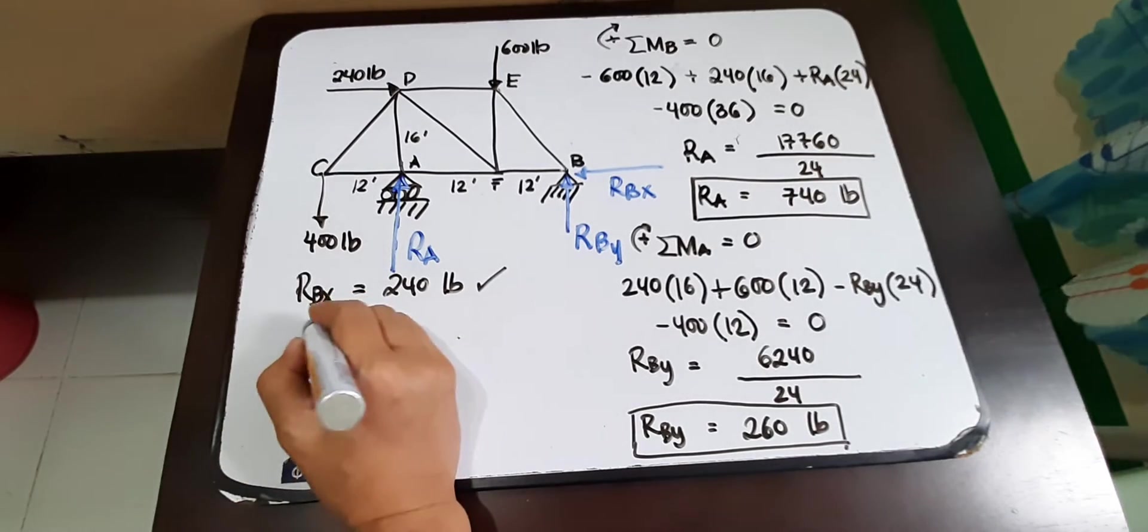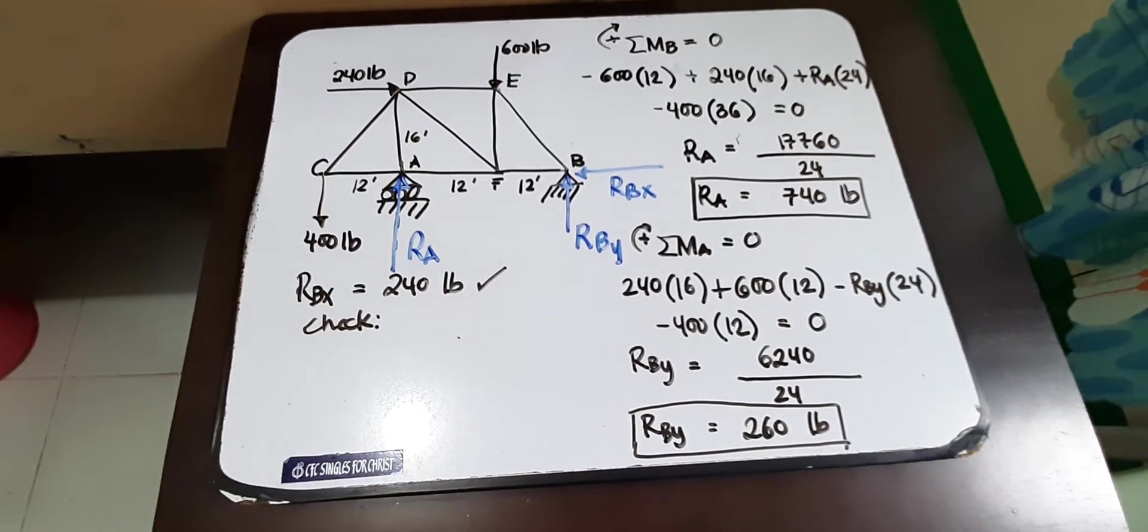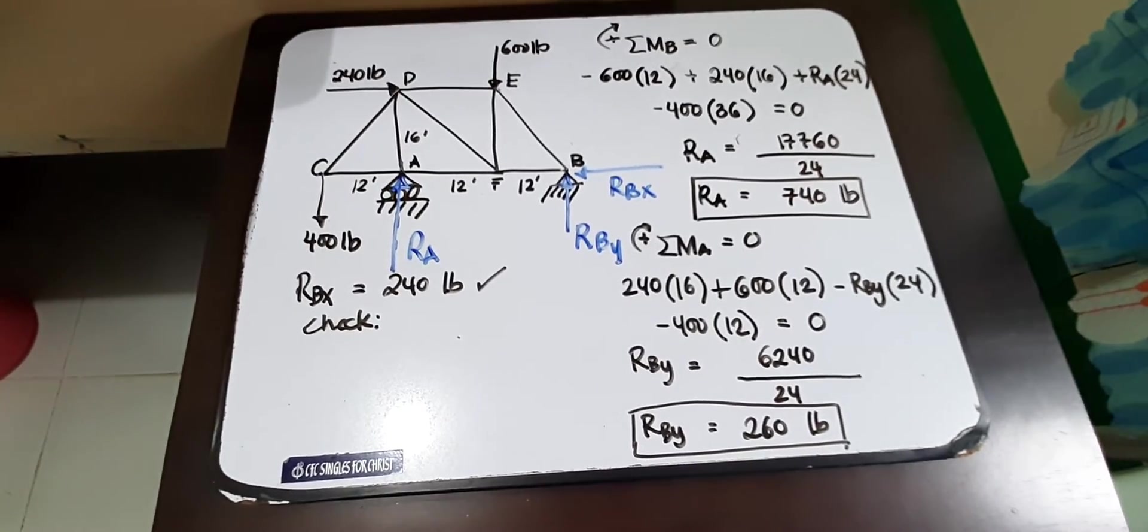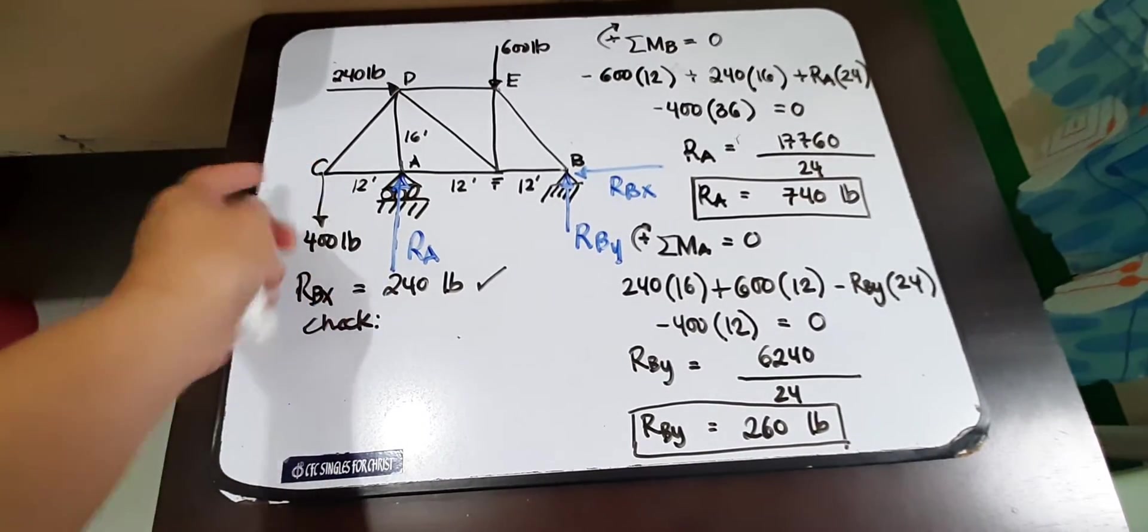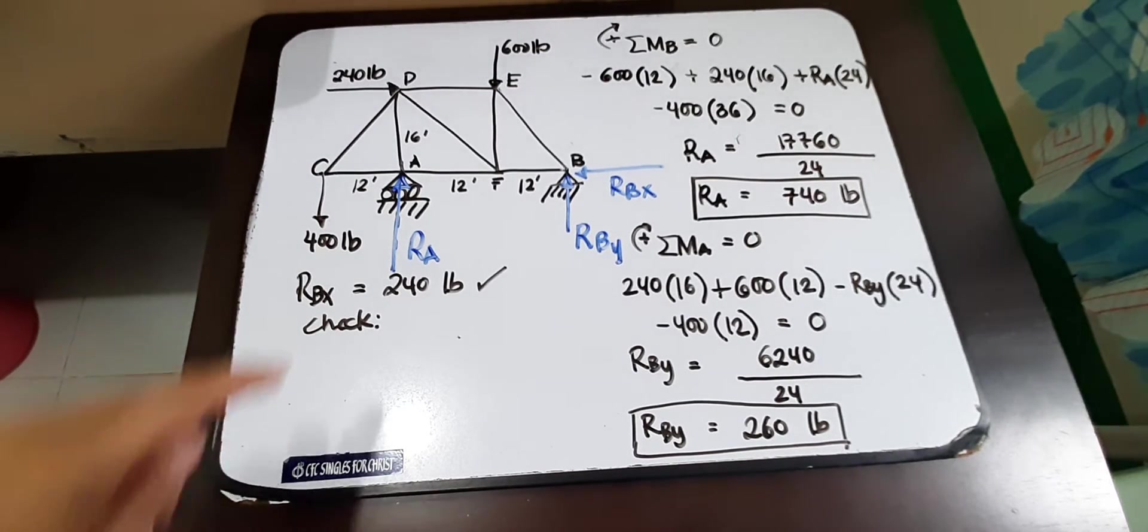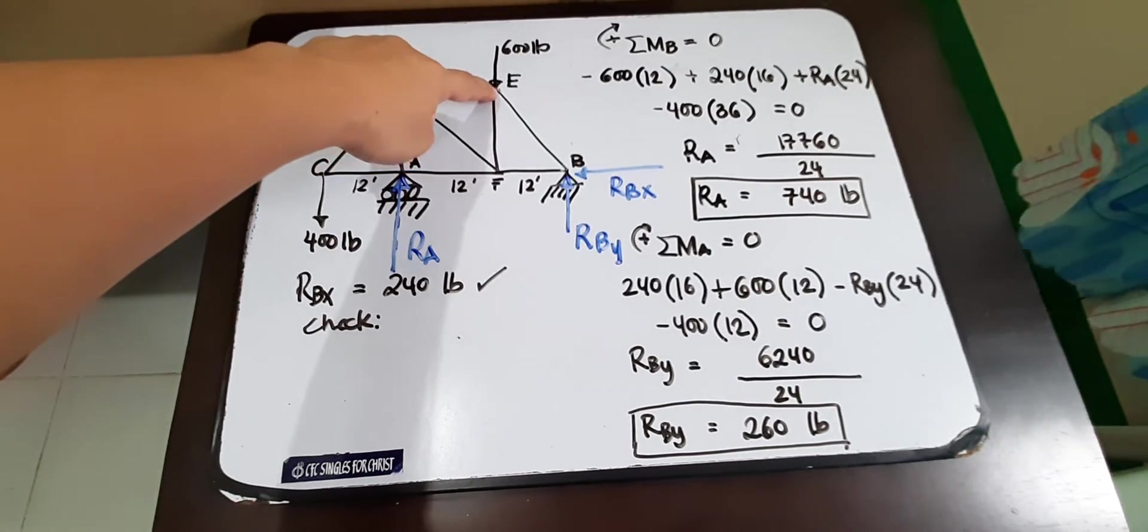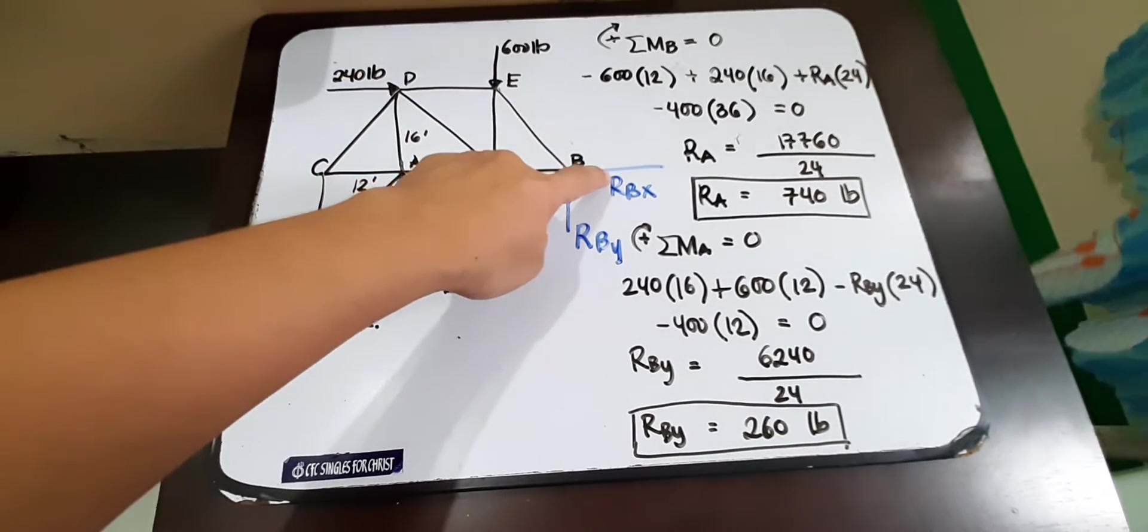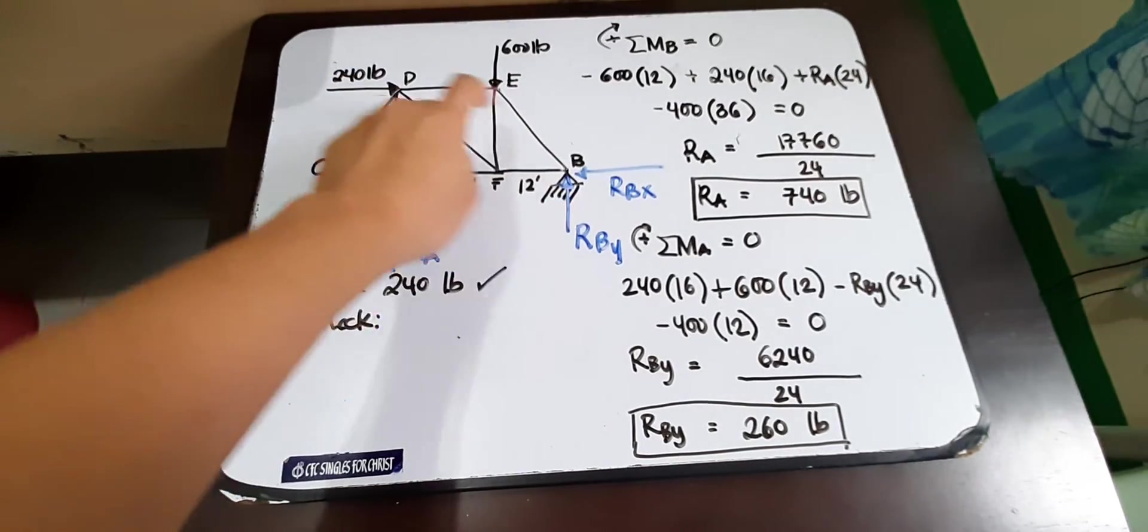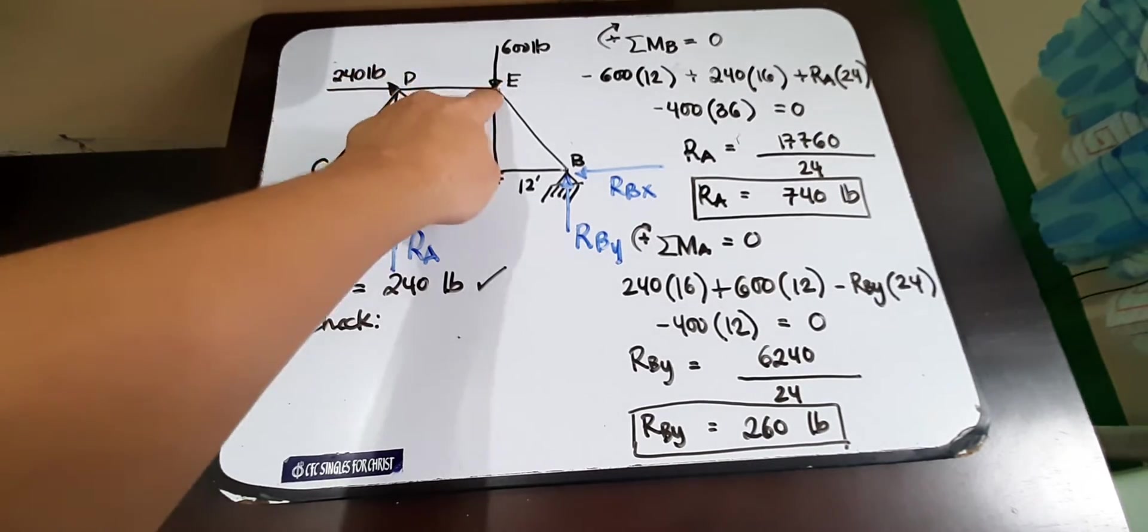So let us check if this would be correct. How to check that? So we could either take any moment center, whether it's D or E, which will have a moment arm with respect to RBX. So it could either be D or E. So we can choose E.